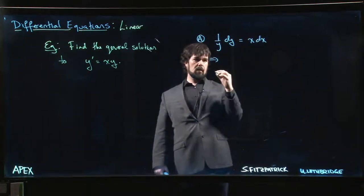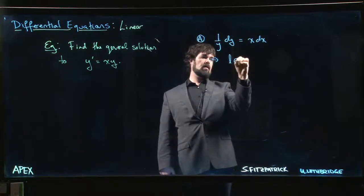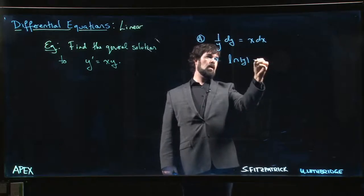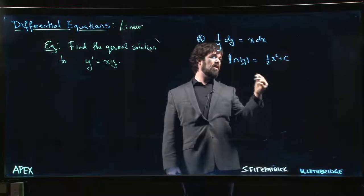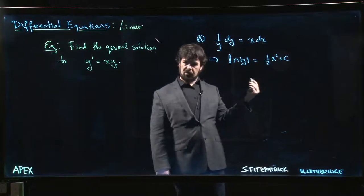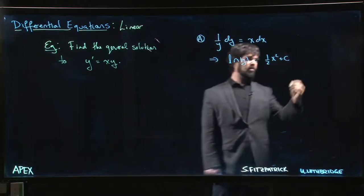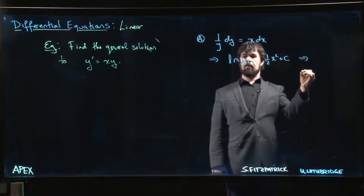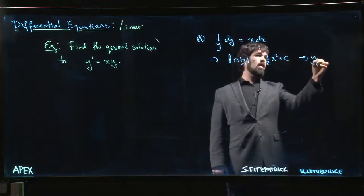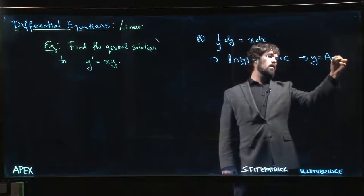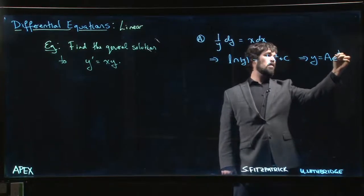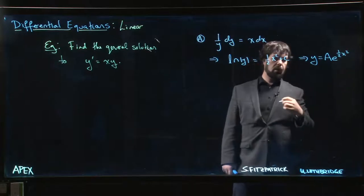So that means that log y is half x squared plus c. We do the usual trick when we exponentiate to account for the absolute value and the constant at the same time, and we come up with a solution that looks like y is equal to, let's say, a e to the 1 half x squared.